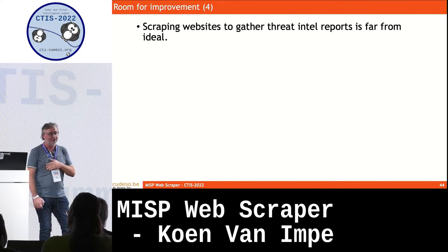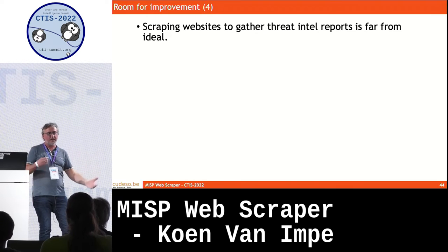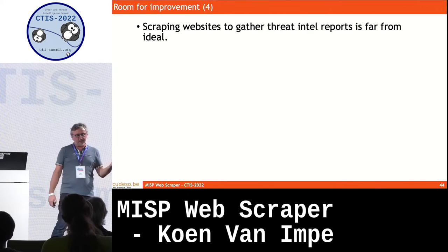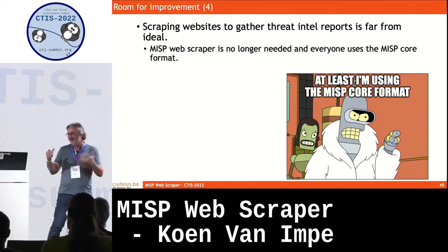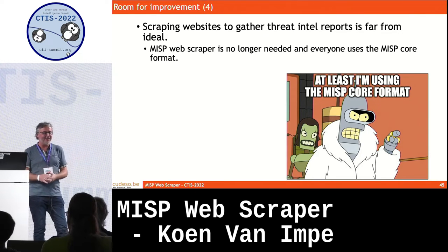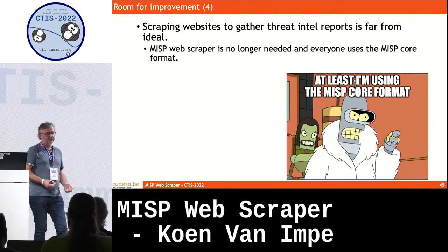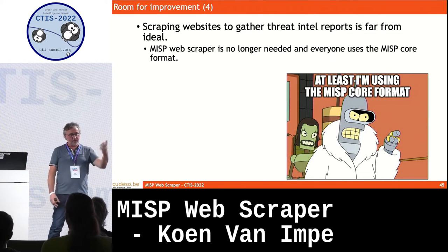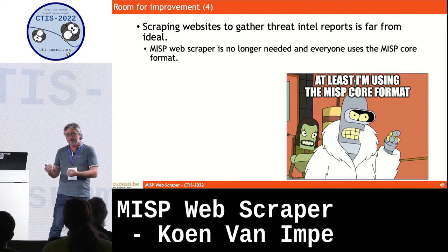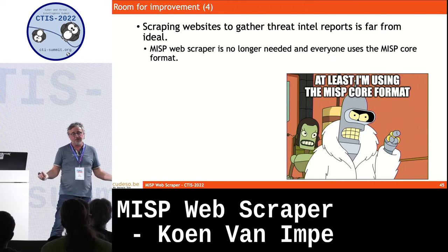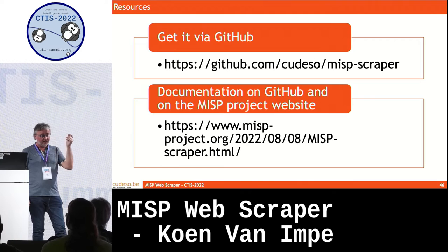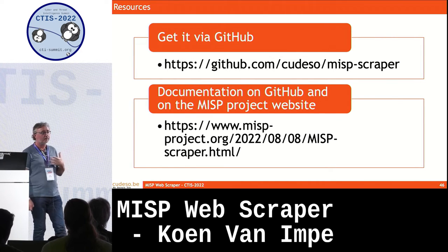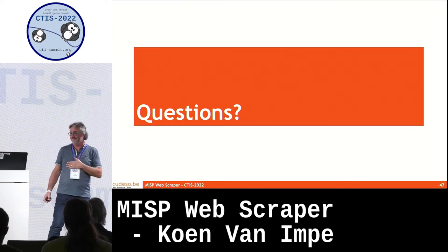Sharing the experience of building this tool — it was a very good experiment. It helps me a little bit with maintaining botvrij.eu. It's not ideal, there's still a lot of improvement needed. I think the easiest way would be if everyone just used the MISP core format. I know this is not going to happen, but it would help — mostly if all these public reports with such good information focused on people that want to use it, instead of just readers. That's something I find very frustrating. The tool is on GitHub, and there's a short blog post on the MISP project website.